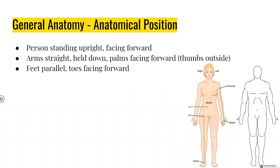We'll go into a bit of general anatomy quickly, starting with the anatomical position. This is really important because it's basically a universal standard for describing where things are in the body relative to other structures. The person is standing upright facing forward, arms are straight held down, palms are facing forward so thumbs are outside or lateral, and feet are parallel with toes facing forward. All comparative terms are relative to the anatomical position — so no matter where my right hand is relative to my head in physical space, it's always going to be inferior.